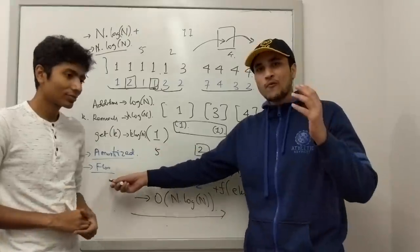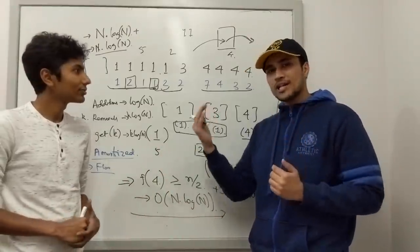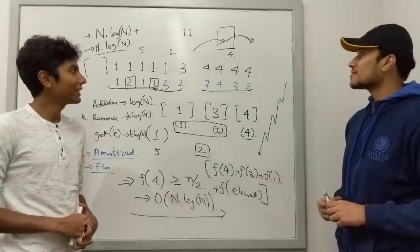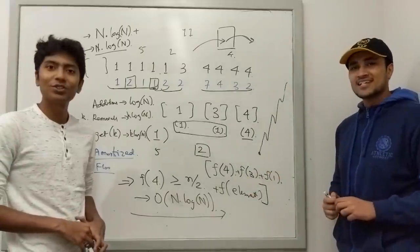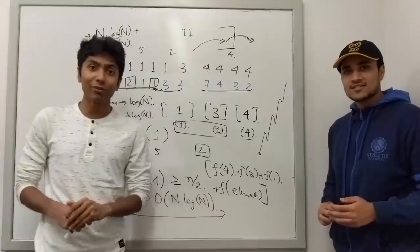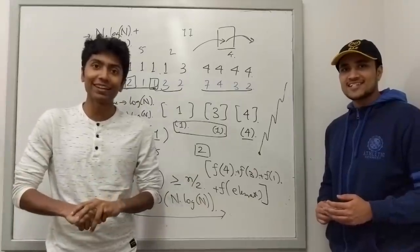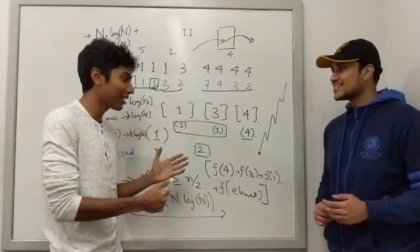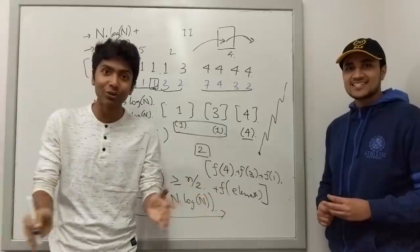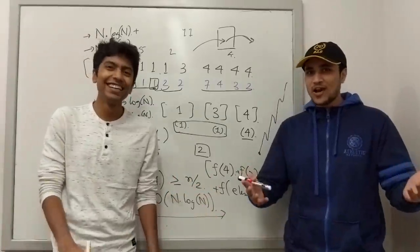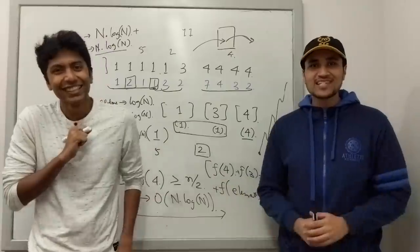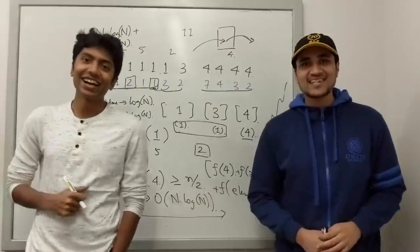The key learning we want you to take away is understanding amortized time complexity and how you can use the concept of flow to get a clearer picture of how this is working. That's the end of the sixth episode of Rachid Challenges Gaurav. Hope you liked it — like, share, and subscribe to our channels. See ya, bye!